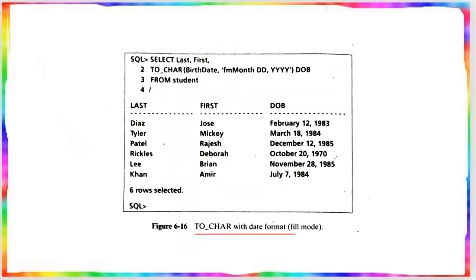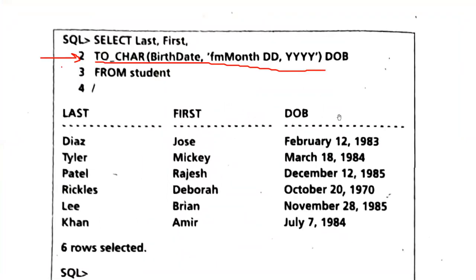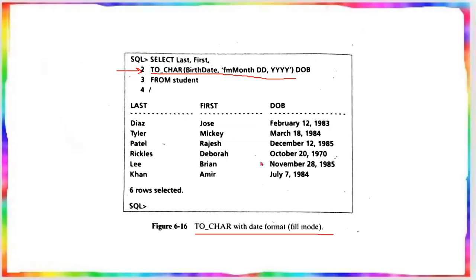On a TO_CHAR with date format example: in the select, the birth date column is converted using TO_CHAR(birth_date, 'Month DD, YYYY') — meaning month in full text, DD as two-digit date, and YYYY as four-digit year. The result shows the birth date converted from a date value to a readable character string.